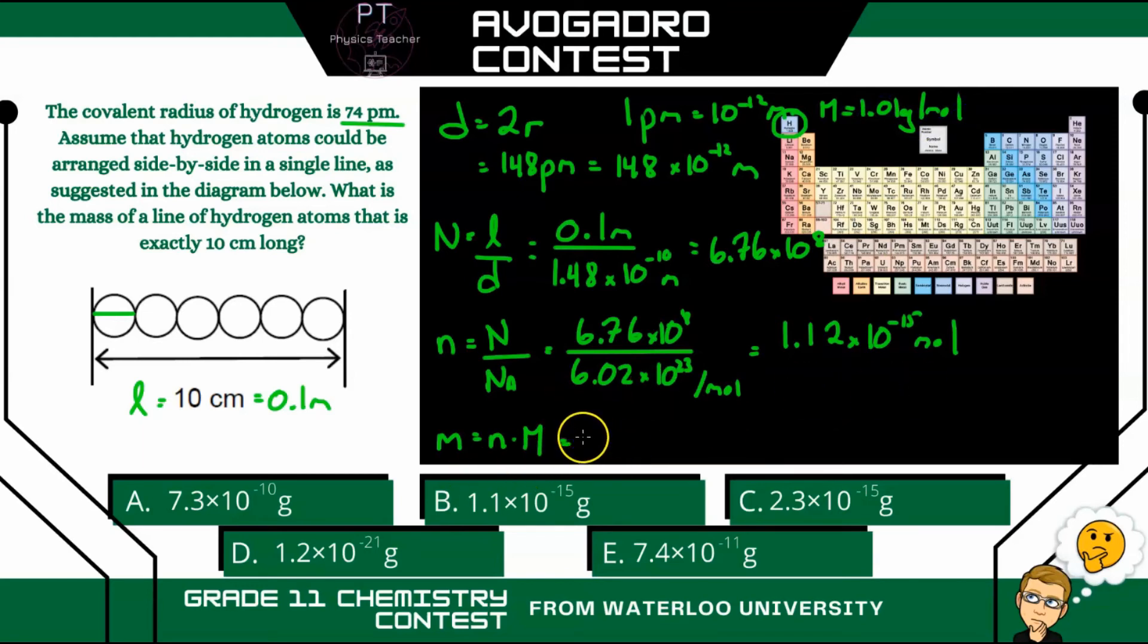So I take the number of moles, 1.12 times 10 to the minus 15 moles, and multiply that by 1.01 grams per mole. So our moles cancel. And we end up with 1.1 times 10 to the minus 15. So our answer is B.